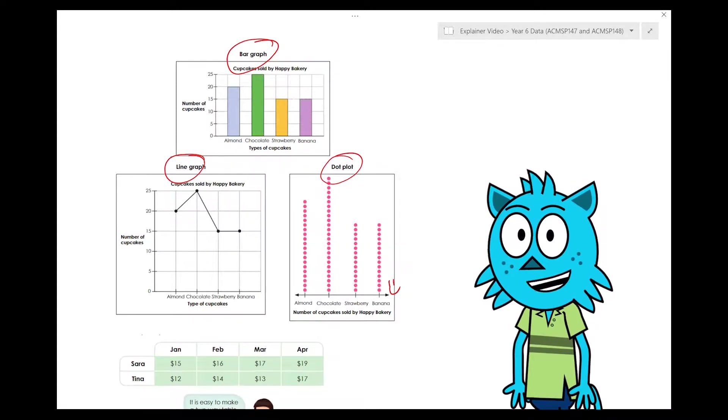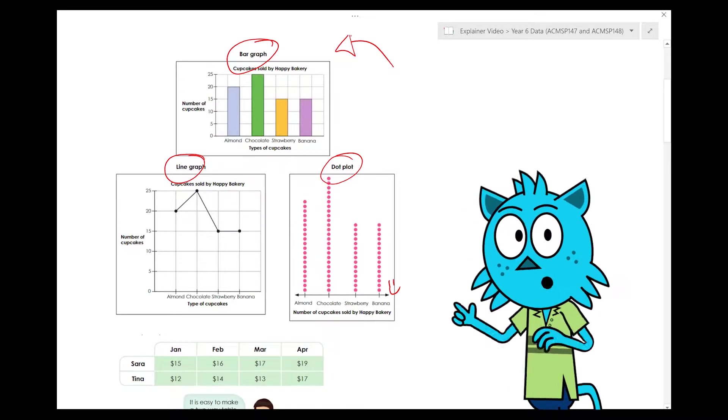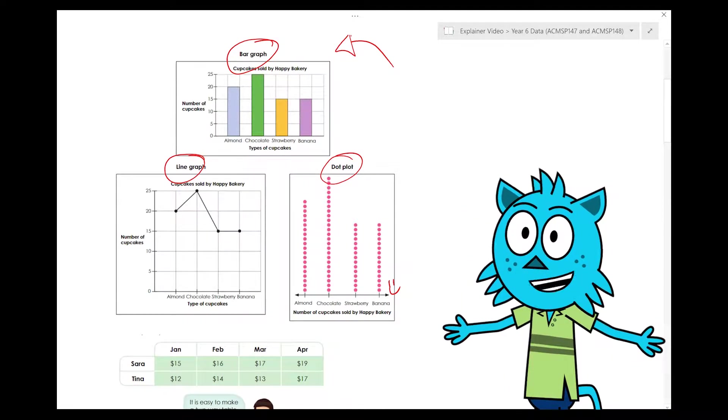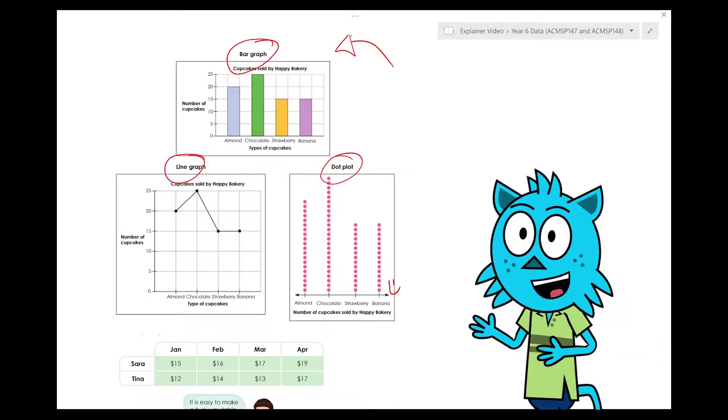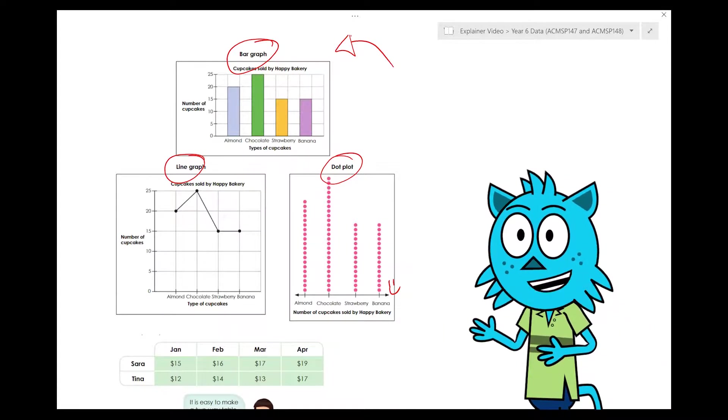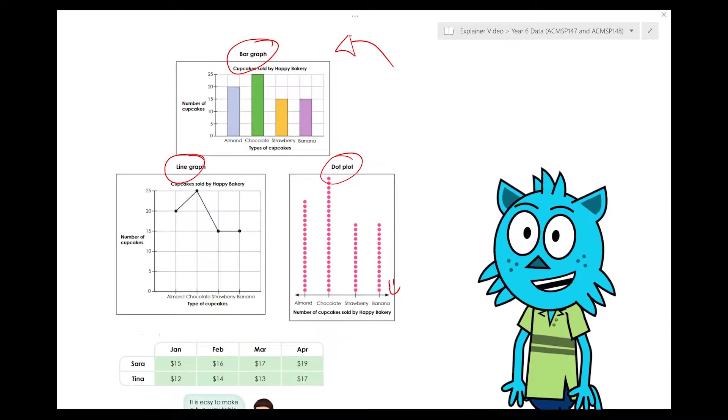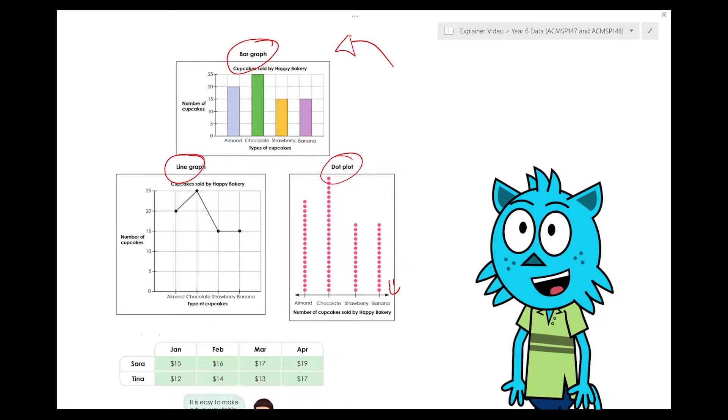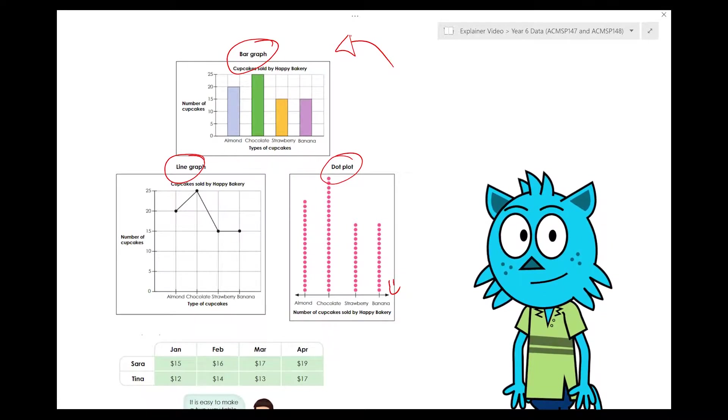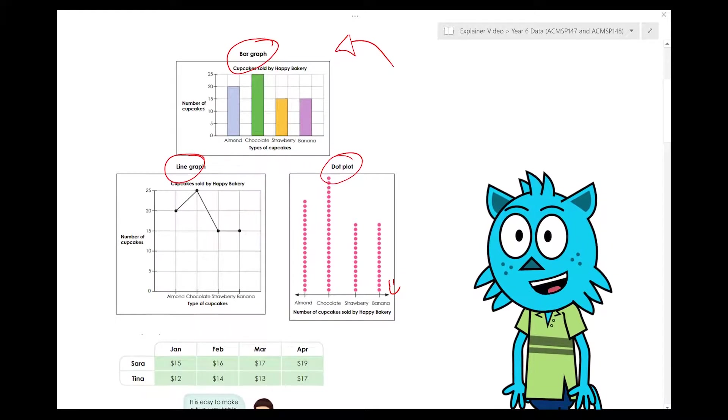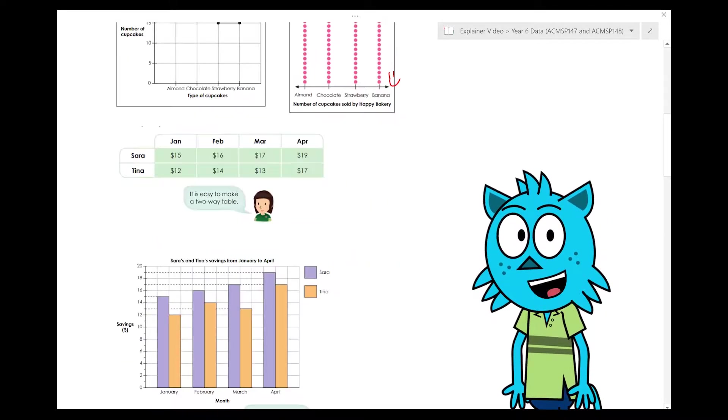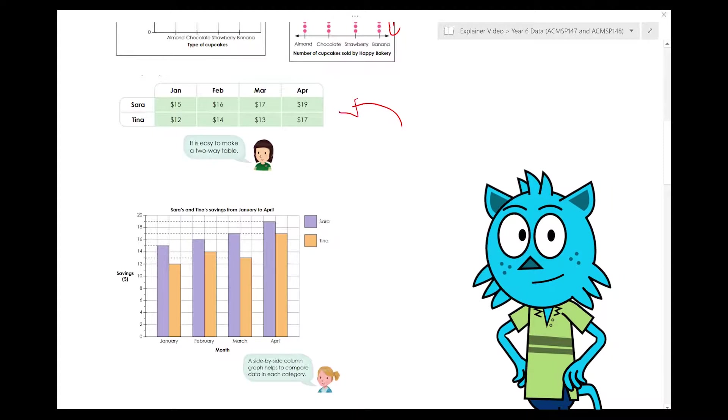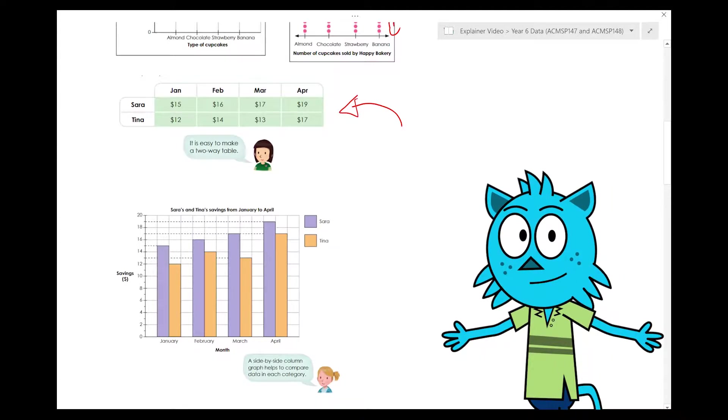What someone could do is just ask their friends, what is your favourite cupcake? Or just to record on a piece of paper, who's buying the cupcakes? And they record them down in a table and or tally it and then put it in a bar graph as shown. For today's lesson, we're looking more at something that we call a two-way table, which is what this one looks like. And we're also looking at a side-by-side column graph.